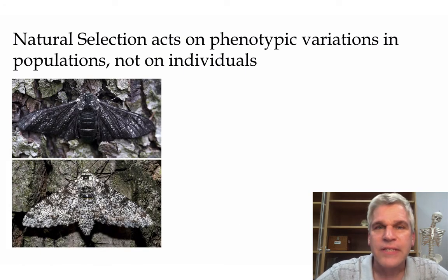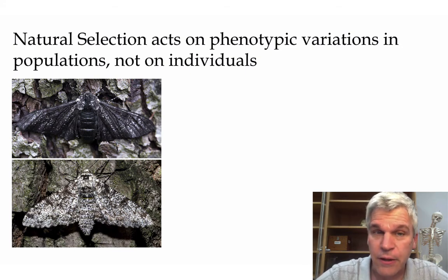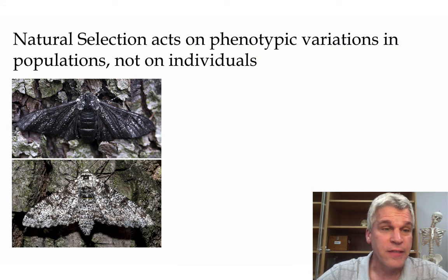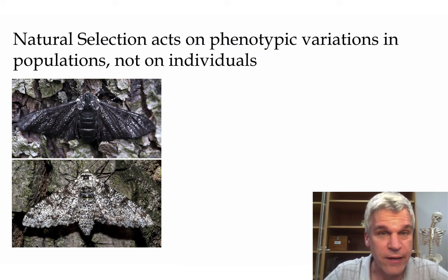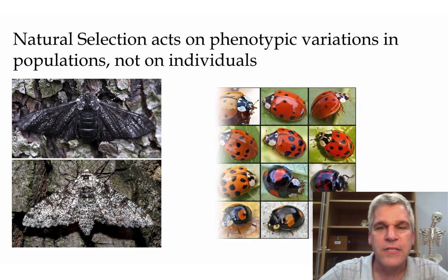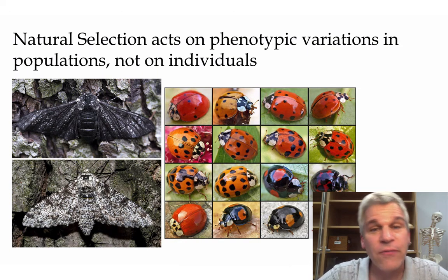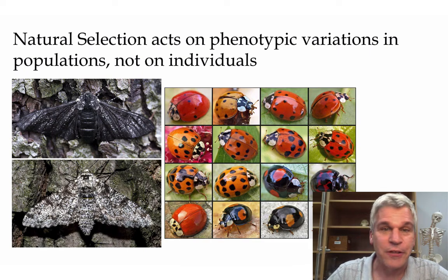A couple of examples of phenotypic variations are the peppered moths in England, where based on their genetics, they come in two different colors — a dark variety and a light colored variety. You can also have lots of different types of variations. For instance, these ladybugs are all the same species, yet they look very different from one another — a lot of variation in that particular population.